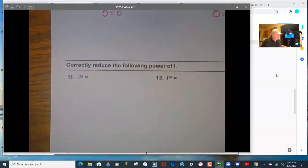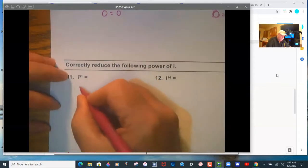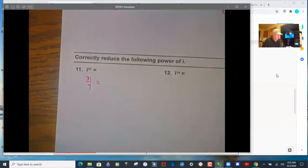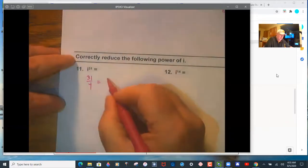i to the 31st. So you're going to divide 31 by 4. And you're going to get remainder 3, 0.75. I'll show that exact work. And then you're going to look up 0.75.